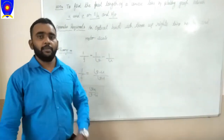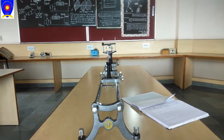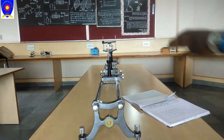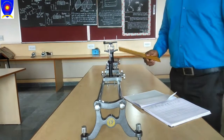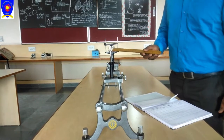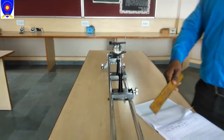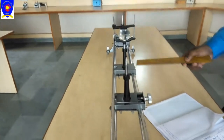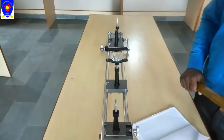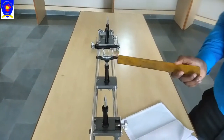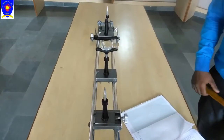Now let's look at the apparatus for this practical. This is the apparatus which is required. Firstly we have a lens — this is a convex lens. We have an optical bench and there are two needles. We have to find the focal length of the given convex lens.